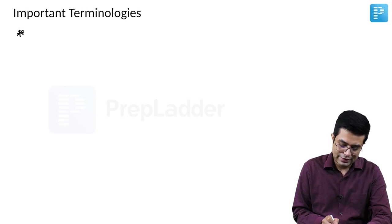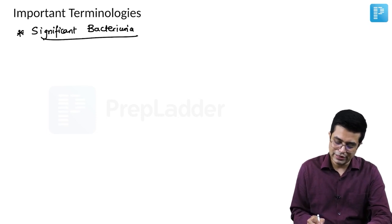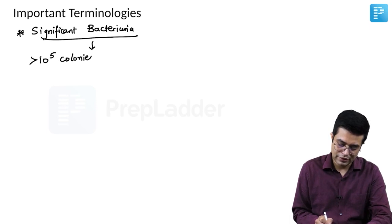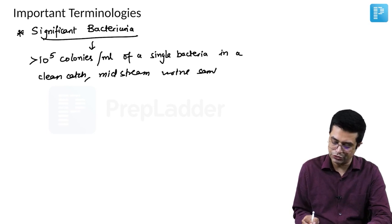First is, how do you define significant bacteriuria? Bacteriuria means bacteria being passed into urine. Significant bacteriuria is defined as more than 10 raised to power 5 colonies per ml of a single bacteria in a clean catch, in a mid-stream clean catch urine sample will be called as significant bacteriuria in the patient.